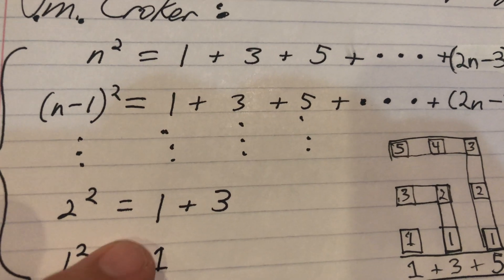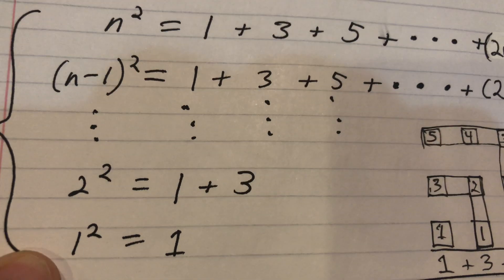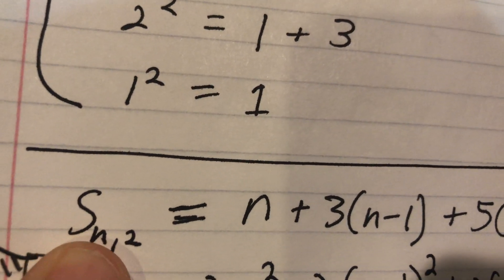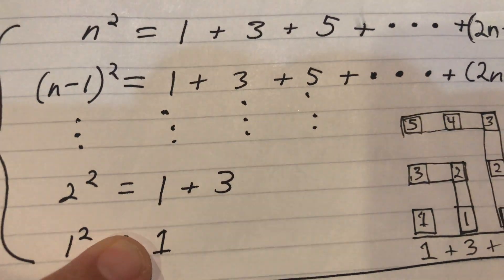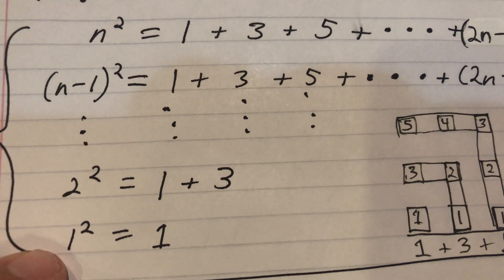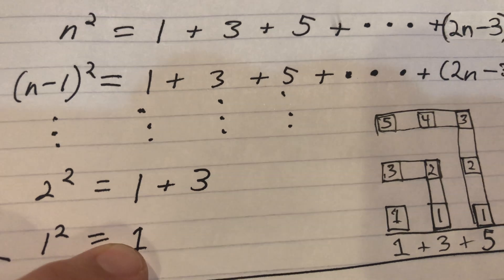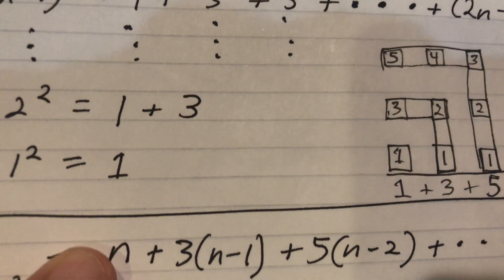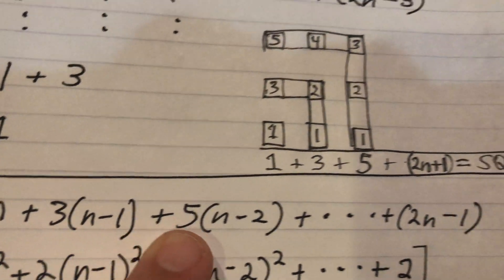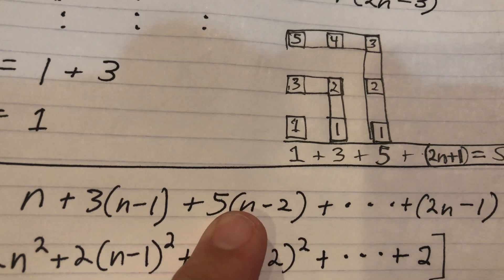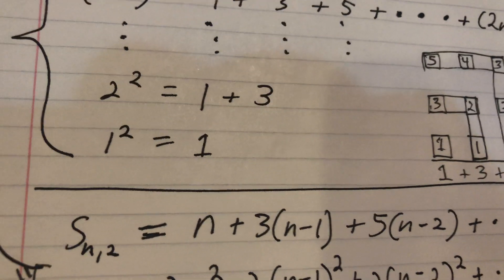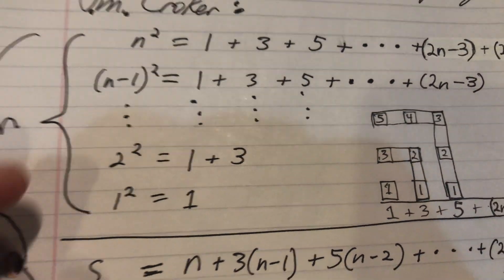We'll call this sum S sub n comma 2 — the notation Croaker used. The first column: how many ones do we have? We use the numbering system that's already there — just ignore the squared part. This tells you that you have n ones. Then we have one less three — that's n minus one threes. Five of n minus two — continuing the pattern all the way out to n minus one.